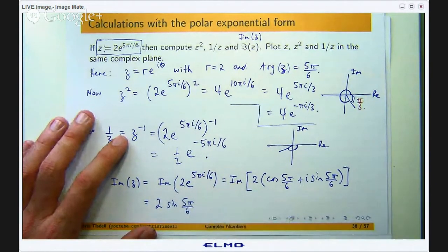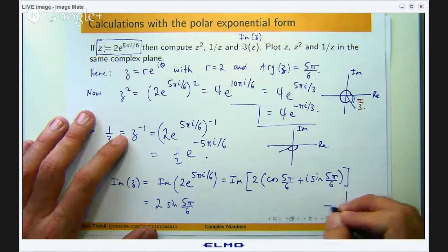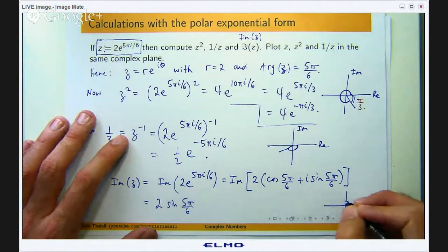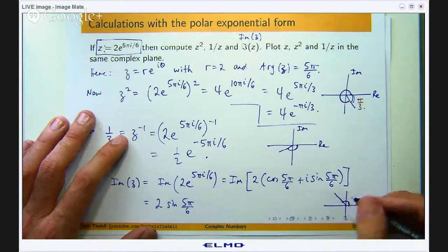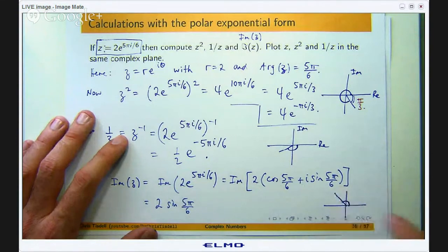Okay so again let us draw a little diagram. You go around 5π/6 radians. Okay it probably should be a bit lower here.